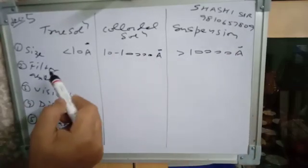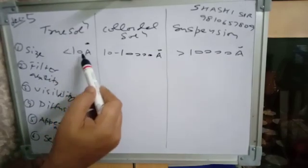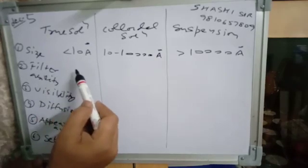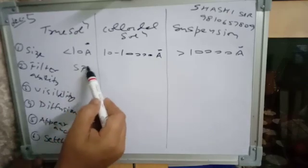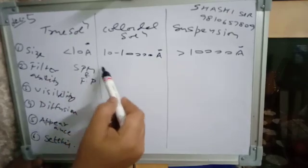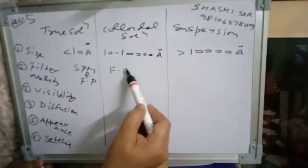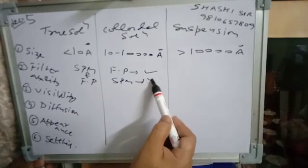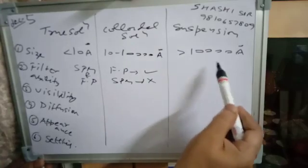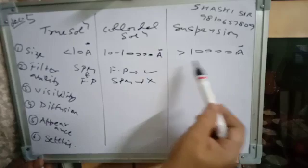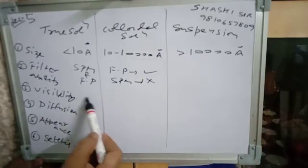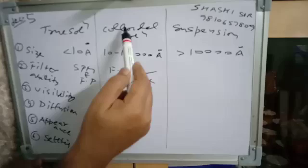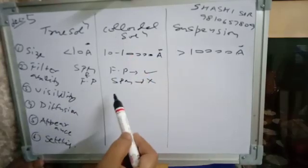On the basis of filterability: true solution particles are very small, so they can pass through SPM as well as filter paper. Colloidal solution can pass through filter paper but cannot pass through SPM, as pore size is very small. Suspension cannot pass through filter paper or SPM.